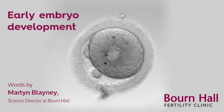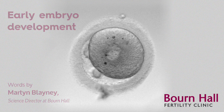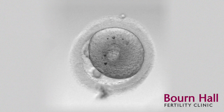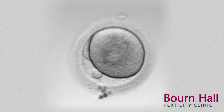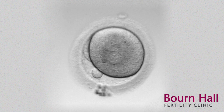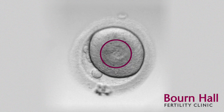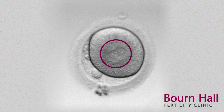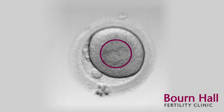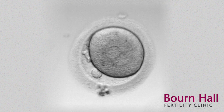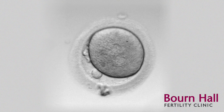Here we have an embryo that's just been fertilized, and this has been captured by time-lapse imaging. Now I'm going to show you the magic that takes place as the embryo develops. Just after fertilization the egg will have two pale circular areas, which are the male and female sets of DNA. That's what tells us the embryo has been fertilized normally.